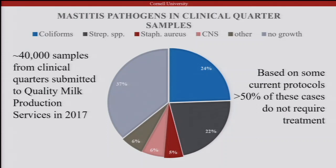About one quarter are coliforms and also Strep species, the most common pathogens. Some Staph aureus, our most common contagious agent, about six percent CNS, and other pathogens like T. pyogenes and yeast. I also want to point out that 50% of cases would not require treatment based on some current protocols for mastitis.